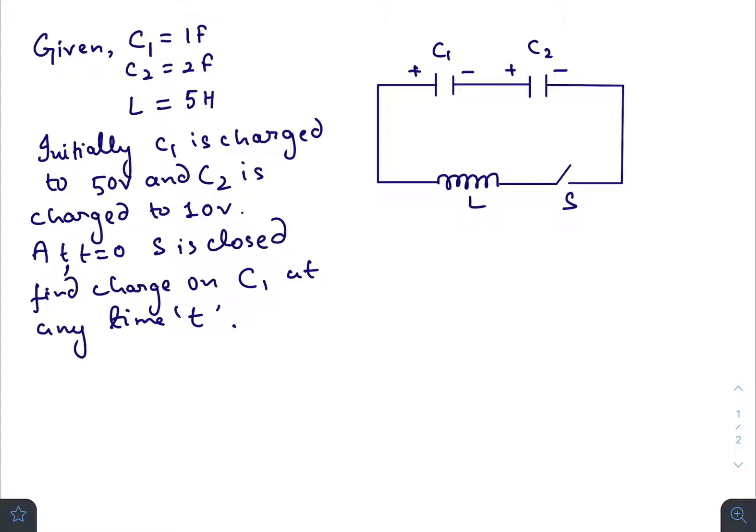In this question, there are two initially charged capacitors of 1 farad and 2 farads, and inductance is 5 Henry. Initially C1 is charged to 50 volts and C2 is charged to 10 volts. At t equals zero, the switch is closed. We need to find out the charge on C1 at any time t. So let us draw the circuit.